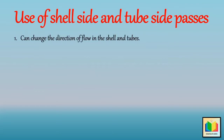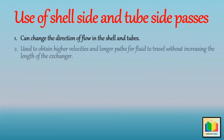Passes are generally used to obtain higher velocities and longer paths for fluid to travel without increasing the length of the exchanger. That leads to high heat transfer rates, because due to this partition or passes, the shell and tube side fluid gets more time inside the exchanger to exchange heat.